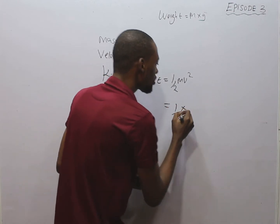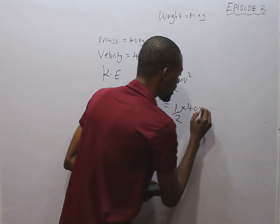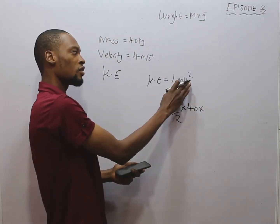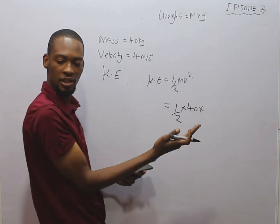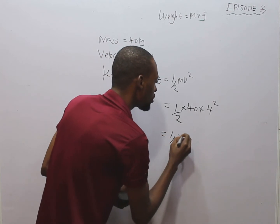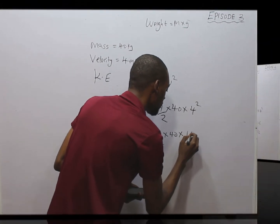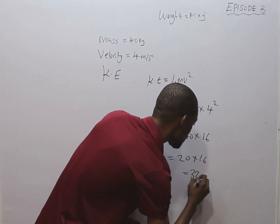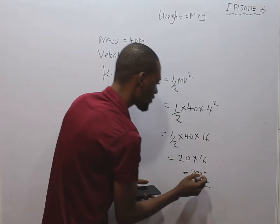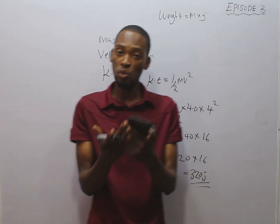So we have: KE = ½ × 40 kg × (4 m/s)². That gives us ½ × 40 × 16, which equals 320 joules. The unit of energy is joules.